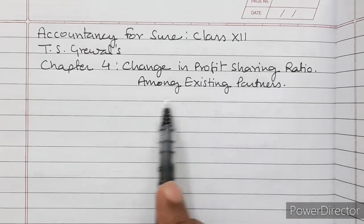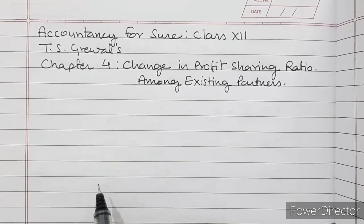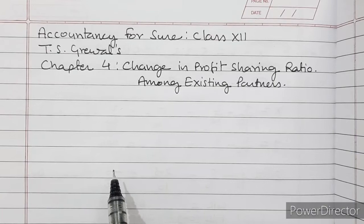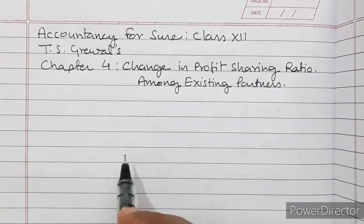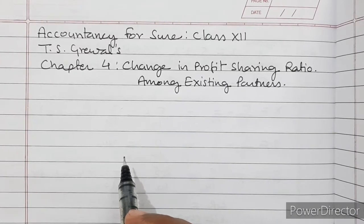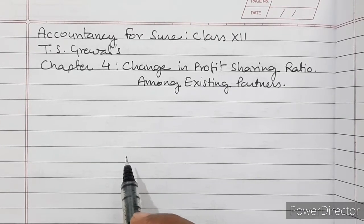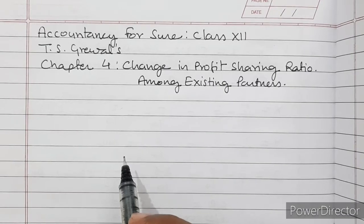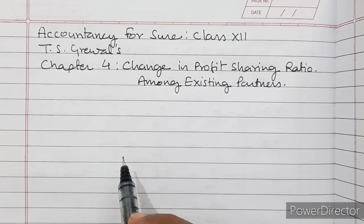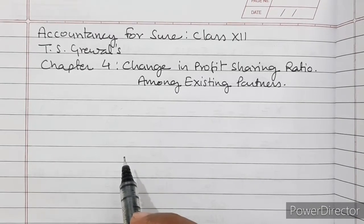We are studying Chapter 4, Change in Profit Sharing Ratio Among Existing Partners, from the TS Grewal book. When the profit sharing ratio among partners changes, or when there is reconstitution of the firm, then assets are revalued and liabilities are reassessed. The gain or loss arising from it is credited or debited to partners' capital accounts in their old profit sharing ratio, because the balance sheet is of the past period.